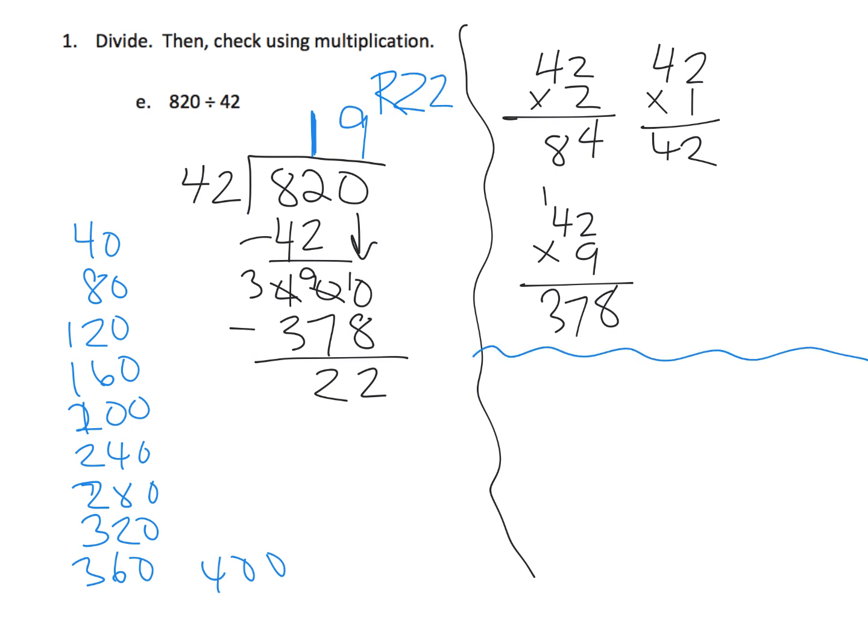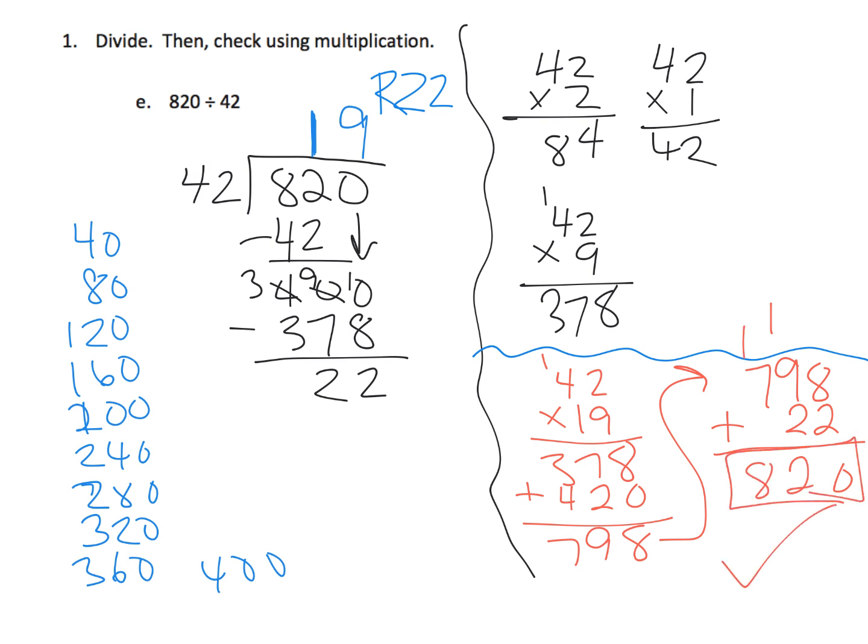So let's check that. Let's check it using red. So we're going to do 42 times 19. And we get 18, 370. Put the 0. 2, 4. So we're going to add, add, so you get 798. But then we're going to take that 798, and we're going to add in our remainder, which is 22. And that gives us 820. Since 820 is what we started off with over here, that probably tells us we're probably right. Their answer is 19 remainder 22.